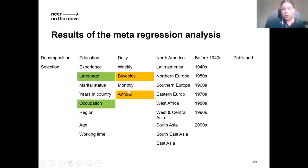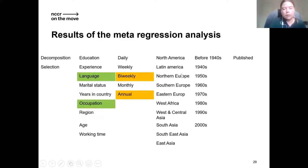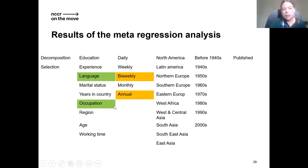From the regression analysis results, controlling for all methodological variables: the methodology used does not seem to matter, which is comforting for the literature. Papers that take language skills and occupation into account find significantly lower wage gaps, and the type of wage variable used also has an impact. We do not find any difference across regions of estimation or the time period, which is quite surprising. We also do not find evidence for publication bias.